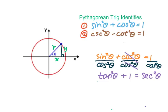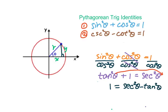We still need equals 1, so we rearrange: 1 equals secant squared θ minus tangent squared θ. Therefore, the third Pythagorean trig identity is: secant squared θ minus tangent squared θ equals 1.